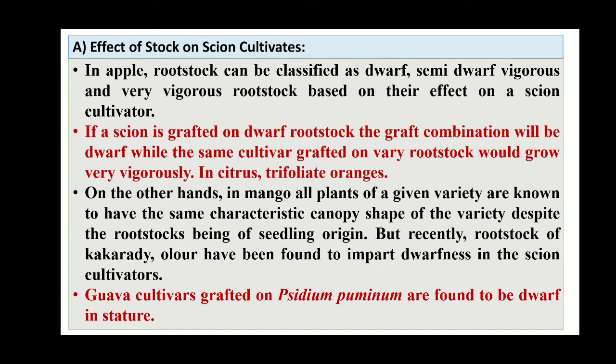For example, in apple, rootstock can be classified as dwarf, semi-dwarf, vigorous, and very vigorous rootstock based on their effect on a scion cultivar. If a scion is grafted on a dwarf rootstock, the graft combination will be dwarf, while the same cultivar grafted on a very vigorous rootstock would grow very vigorously. In citrus, trifoliate orange is also an example.